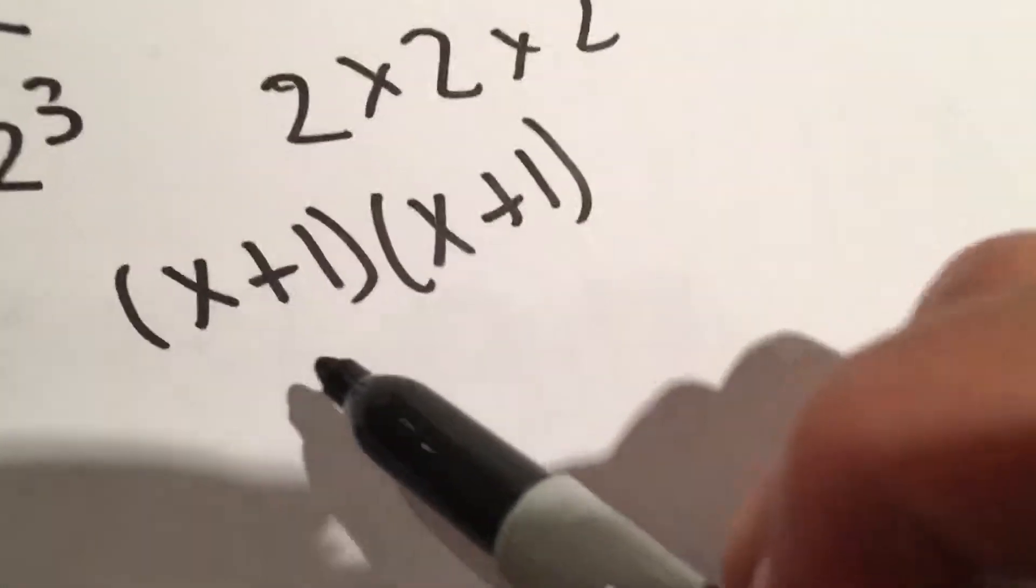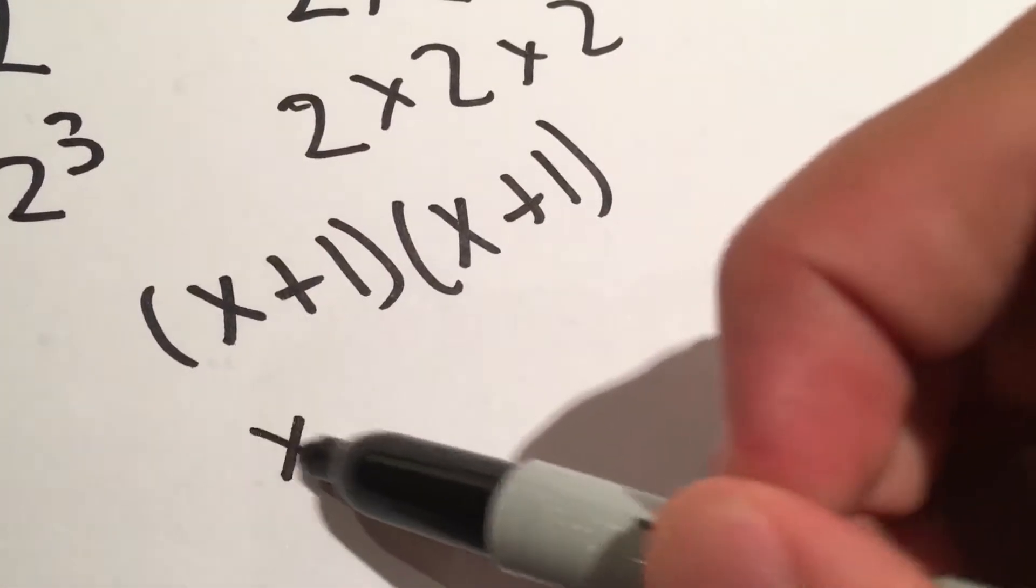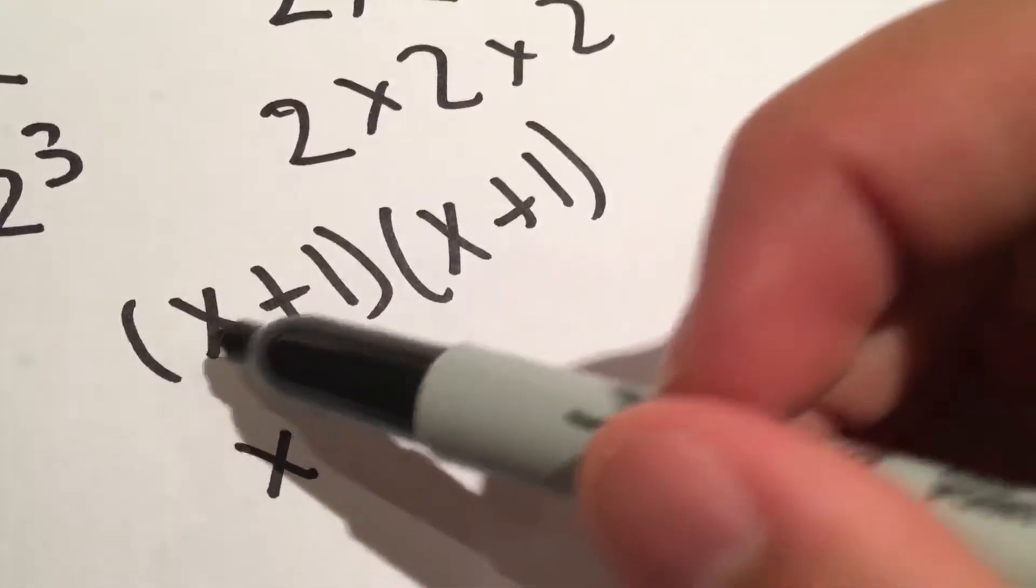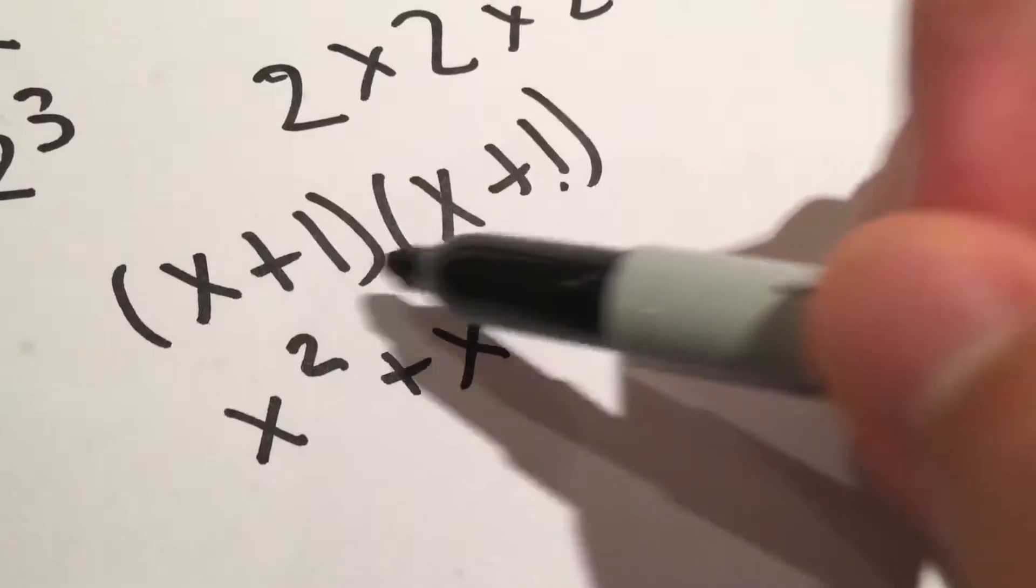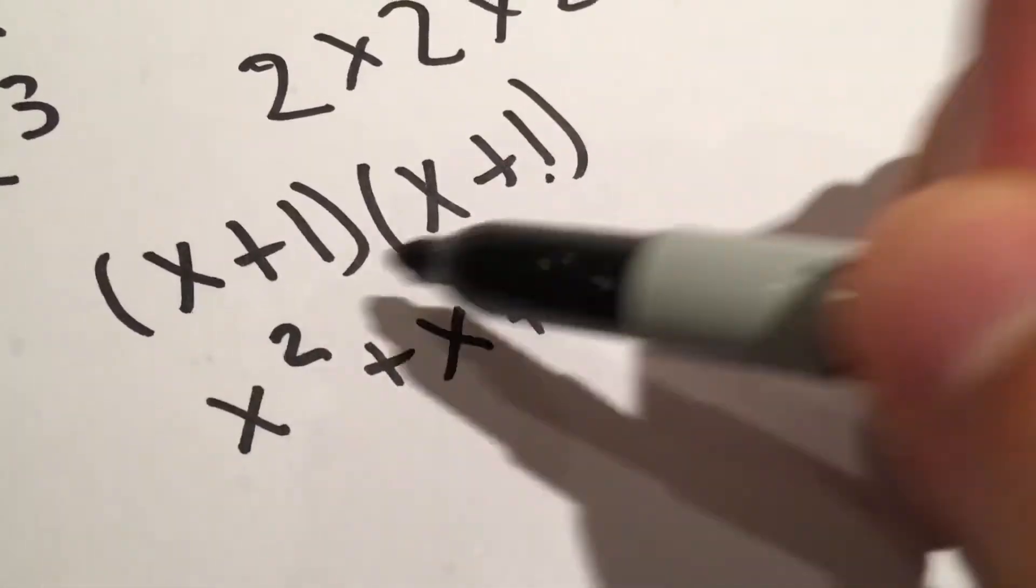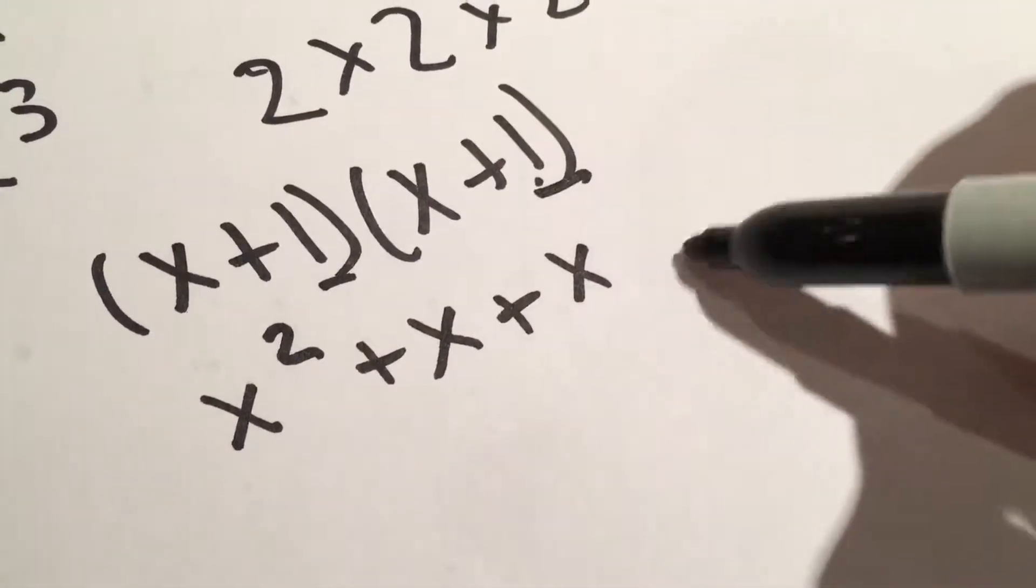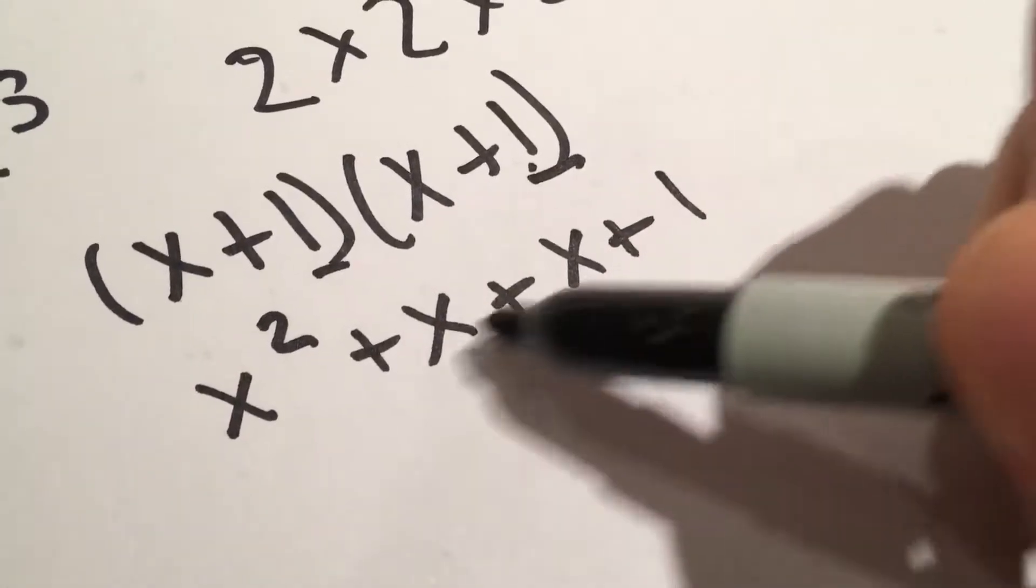The way we multiply this out is we do x times x, which is x squared. X times 1 is just x. 1 times x is just x, and then 1 times 1 is 1. We add the x's up and we